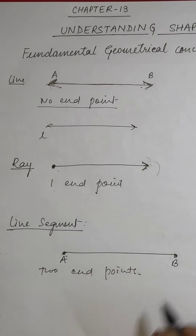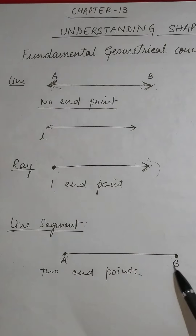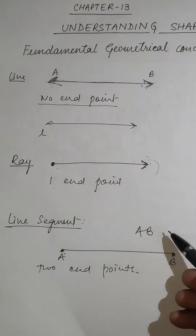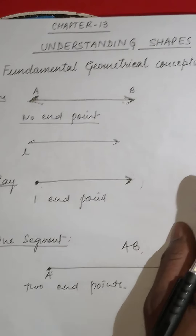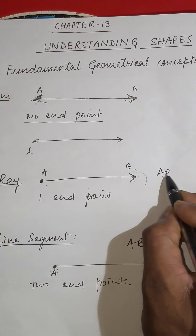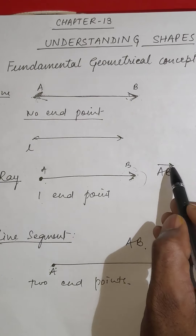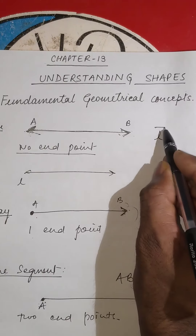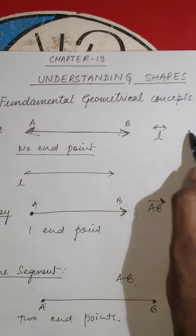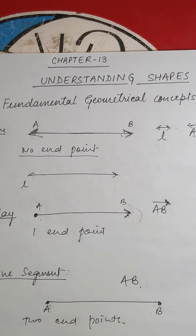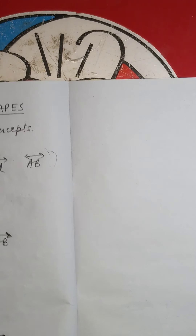We indicate a line segment using two letters, for example AB. A ray AB is represented with one arrow. A line segment is indicated with no arrows, and a line AB is indicated with two arrows on both sides.